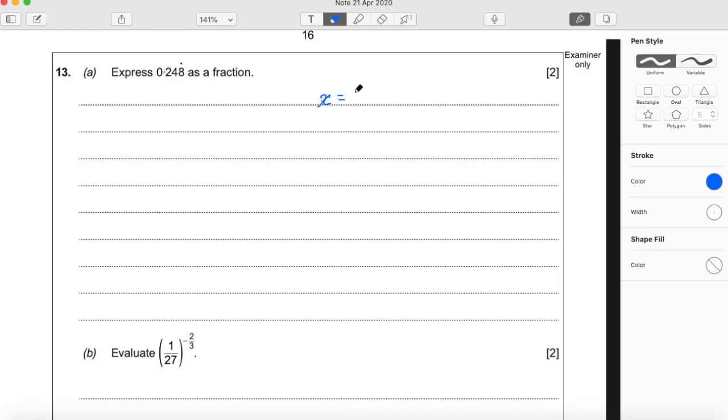So x equals 0.248 recurring equals 0.24888 forever. I like drawing it out in this longhand way just to see that the 8s keep going. And it's quite useful for the method I'm about to show you.